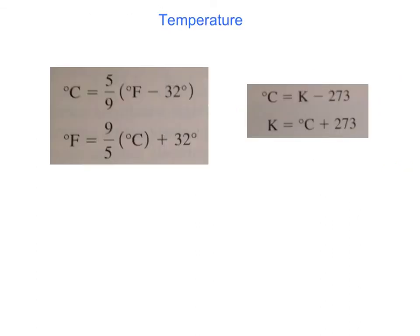You need to be able to take degrees in Fahrenheit and convert to Celsius and then to Kelvin and back and forth. Memorize one formula and derive the other when you need it, but make sure you can go back and forth. If you're given Celsius, find Fahrenheit and Kelvin; if you're given Kelvin, find Celsius and Fahrenheit.